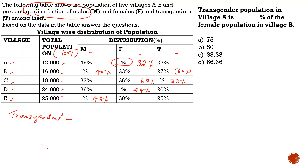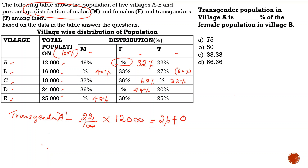The first question: In village A, transgender strength is 22%. So 22 divided by 100 into the total population gives us 2,640. So transgender population in village A equals 2,640.